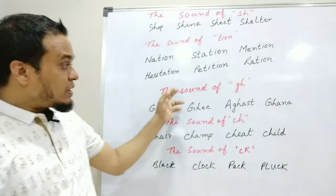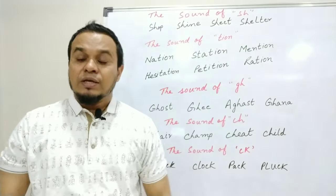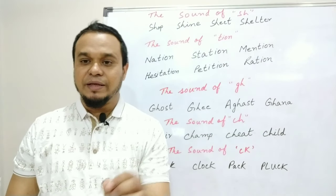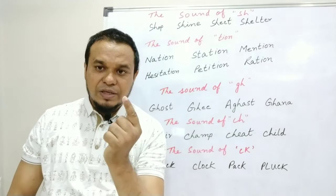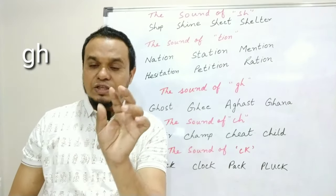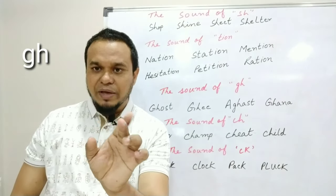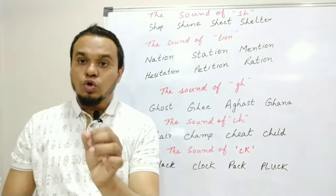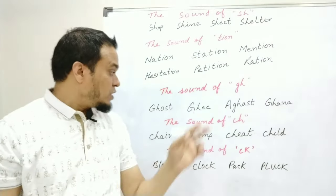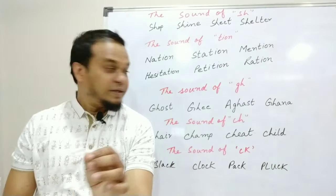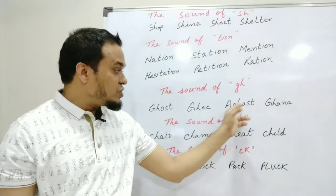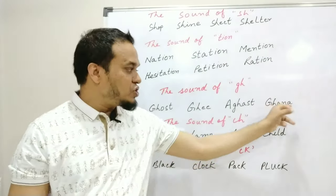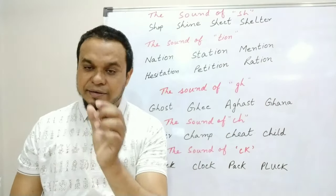The next rule is GH. When GH comes together, we read it as a 'g' sound — not just G alone, but when GH appears together, the sound becomes 'g'. For example: GHOST, GHEE, AGHAST, GHANA.